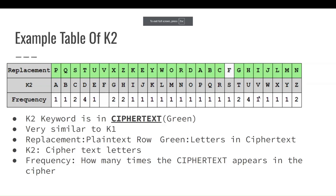Alright, so starting with K2, we can see that we have three different rows here. We have the replacement row, we have the K2 row, and we have the frequency row.